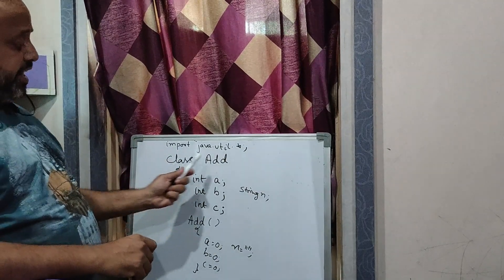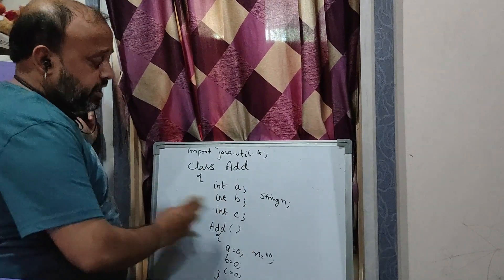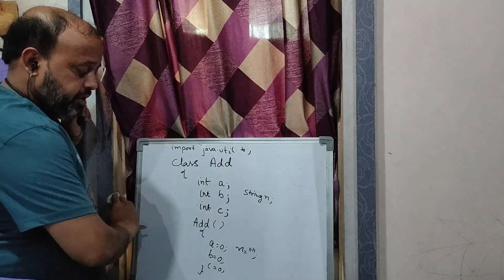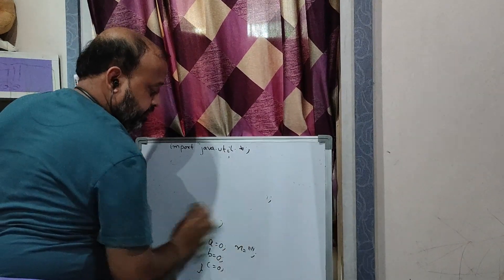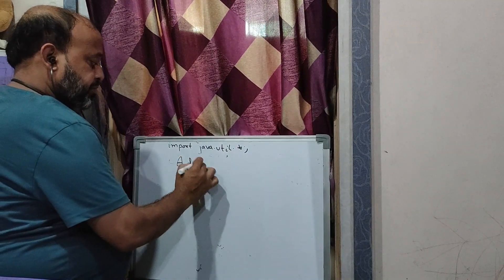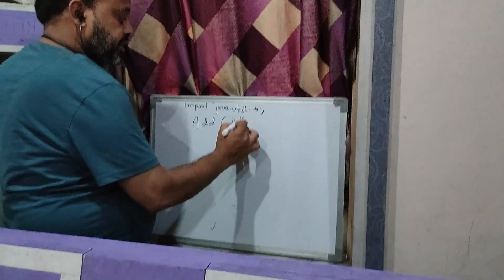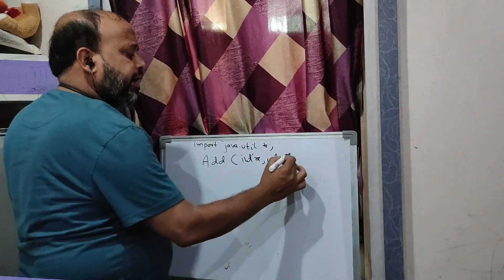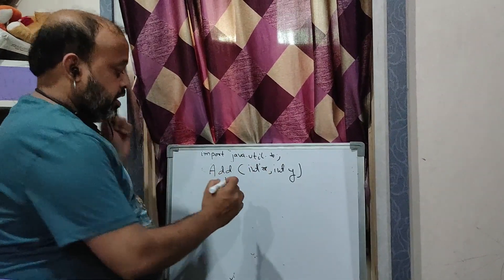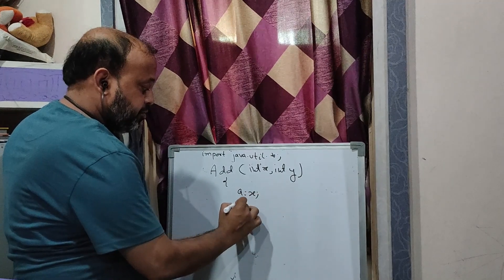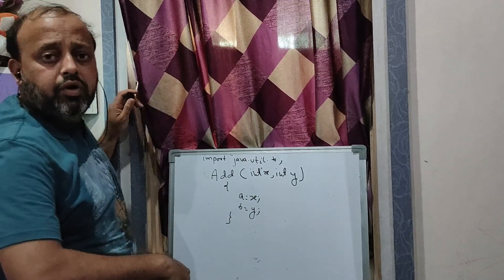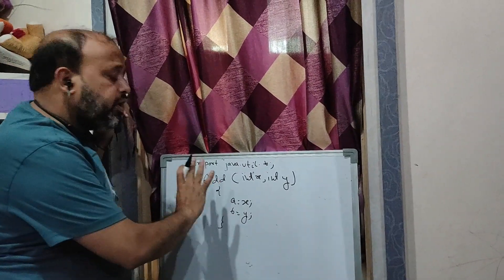So till now what we have done is declared the class, instance variables, and a default constructor. Now I am going to use a parameterized constructor and a method. In the parameterized constructor, same name as the class, we have to take parameters. Suppose I have to add two numbers, so I take two parameters: int x, int y. Then: a = x, b = y. This parameterized constructor also does the work of input.